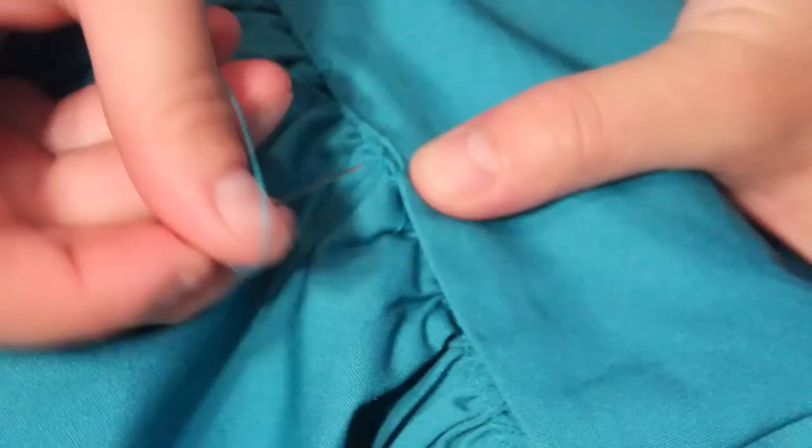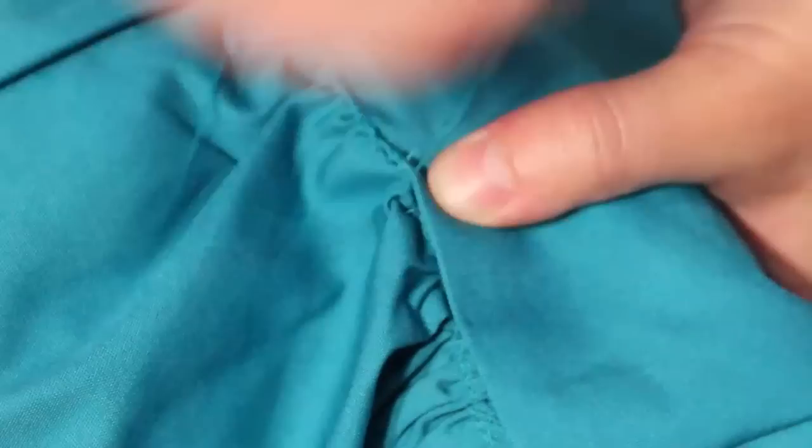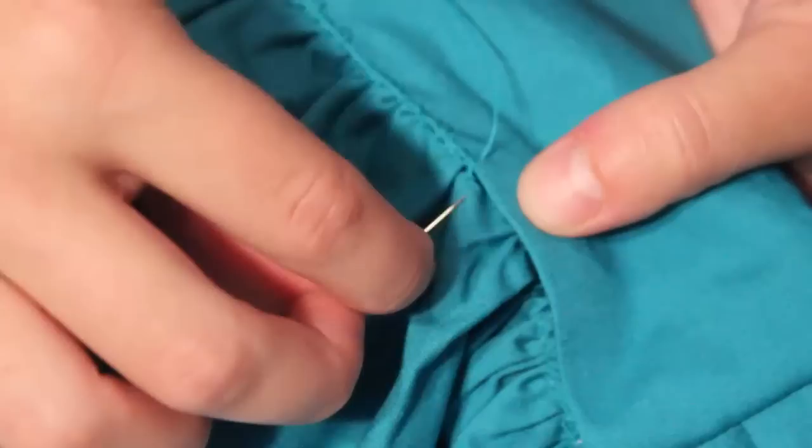Iron flat. Then hand sew a whip stitch to close up the opening on the waistband in the back.